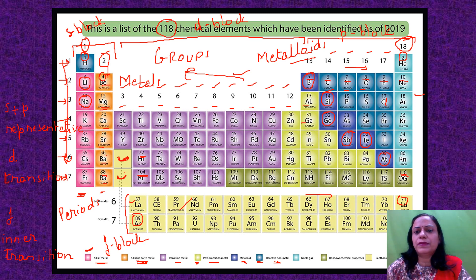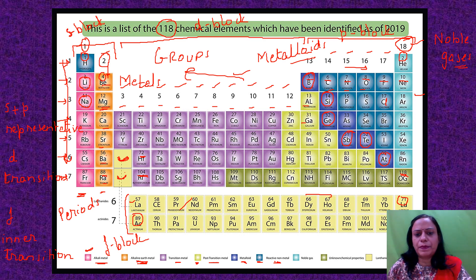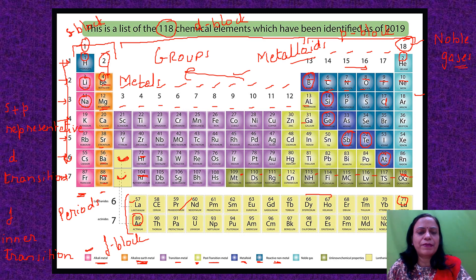The last column — group number 18 — is the group for noble gases. Then the elements with atomic numbers around 109 to 118 in that particular color are elements whose chemical properties are still unknown — they have been discovered quite recently and research is still ongoing to find out their chemical properties.